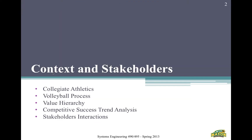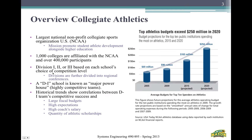To go over some context on the NCAA: it's one of the biggest national nonprofit collegiate sports organizations in the U.S. There are 1,000 colleges and 400,000 participants. They're broken down into three levels — Division I, II, and III — with Division I being the best and Division III being the worst.